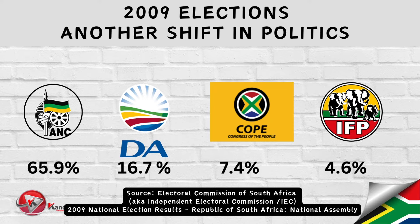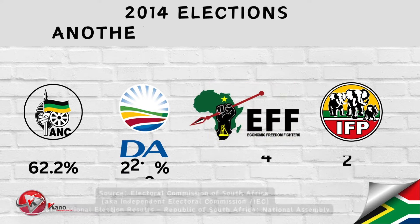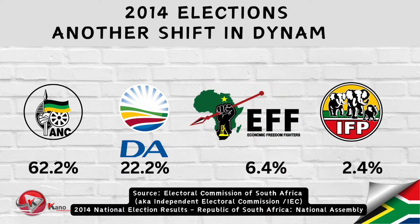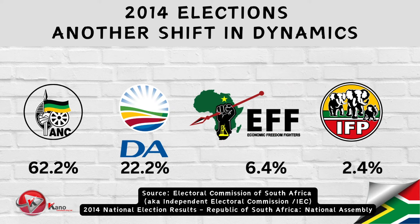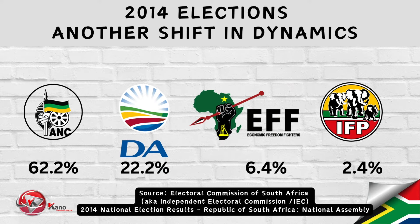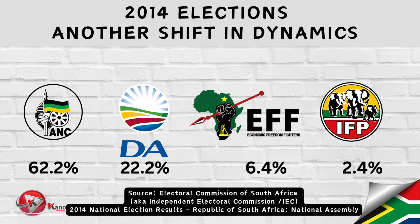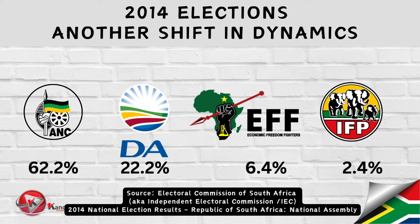During the 2014 national and provincial elections, we witnessed yet another shift in dynamics. While the ANC retained its majority, its support was however declining. There was yet another new player in the South African political realm — the Economic Freedom Fighters, also known as the EFF — which made a significant debut in those elections, while the DA continued its growth by retaining its position as the official opposition.